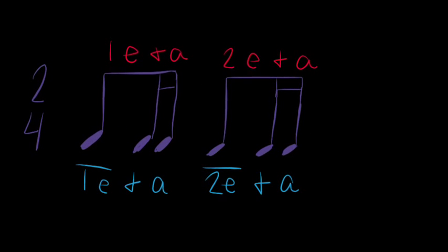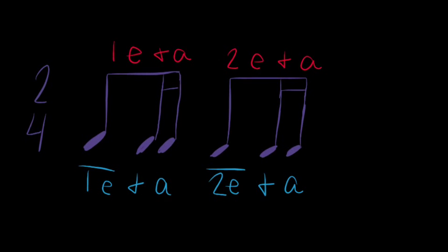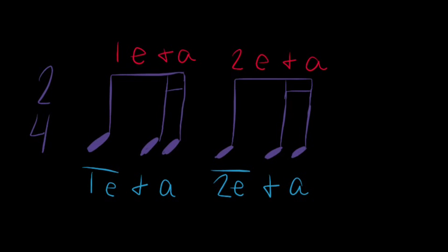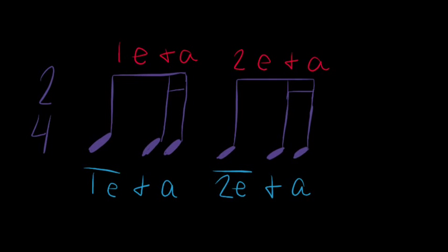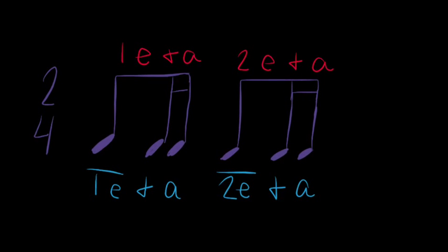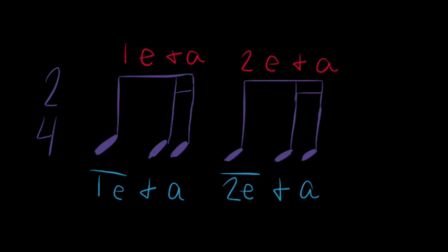Just like normal eighth notes, the first eighth note in each of these beats will be labeled as a number. The E will be silent because it is taken up inside the numbered beat. Let's count together. Ready, go. 1-and-a, 2-and-a.